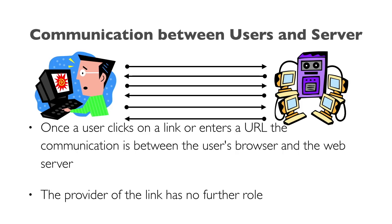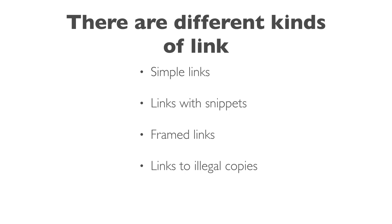Once a user clicks on a link or enters a URL, the communication is between the user's browser and the web server — the provider of the link has no further role. But there are actually different kinds of links, and when considering this issue, it's worth taking a closer look at them. The most straightforward is a simple link from one website to another. But we can also have links with snippets, framed links, and links to illegal copies of works. Let's look at each of these individually.